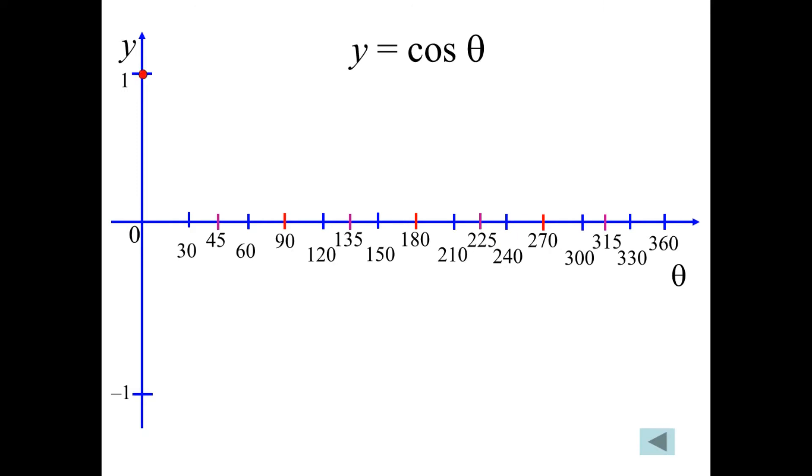The cos of 30 is root 3 over 2. We know from the special triangles, the cos of 45 is 1 over root 2, but we would do it on a calculator, and get these decimals. The cos of 60, the cos of 90 is zero. Cos of 120, we know to be negative 1 half from the special triangles, and so on. From the calculator, we would get these points.